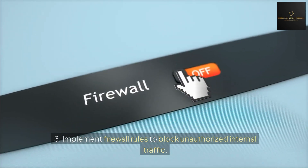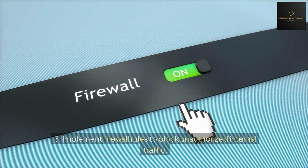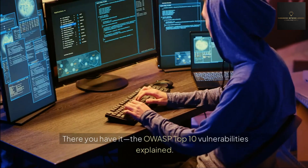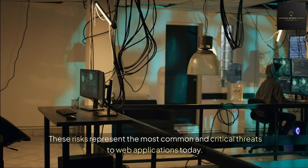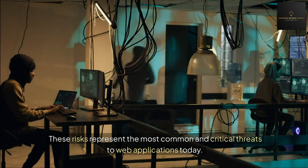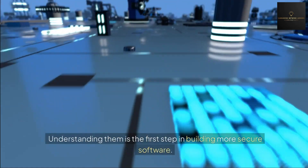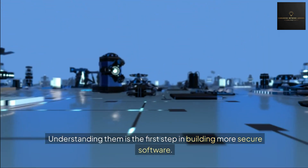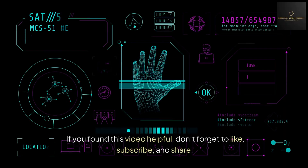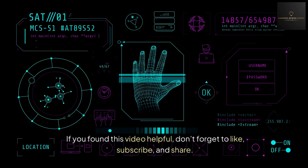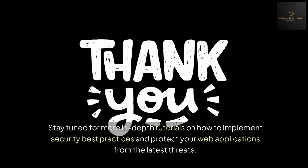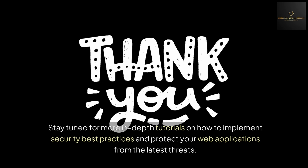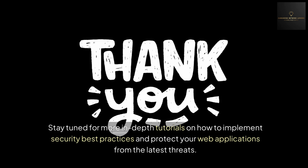Third, implement firewall rules to block unauthorized internal traffic. Conclusion: There you have it — the OWASP Top 10 vulnerabilities explained. These risks represent the most common and critical threats to web applications today. Understanding them is the first step in building more secure software. If you found this video helpful, don't forget to like, subscribe, and share. Stay tuned for more in-depth tutorials on how to implement security best practices and protect your web applications from the latest threats.